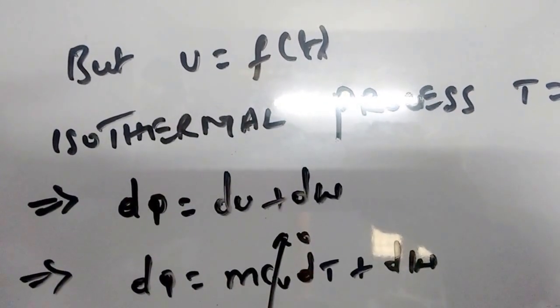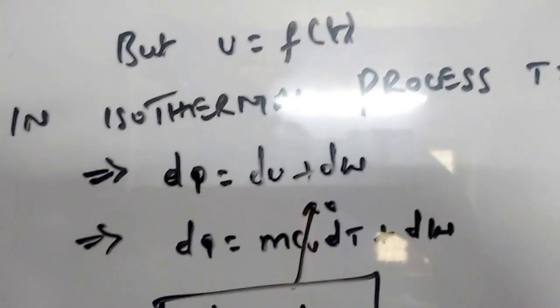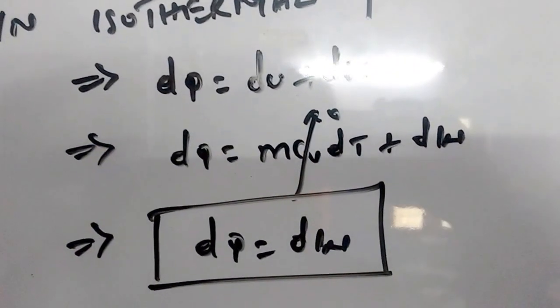As there is no change in its temperature, this dt term becomes zero. Therefore, we can write the above equation as dQ is equal to dw.